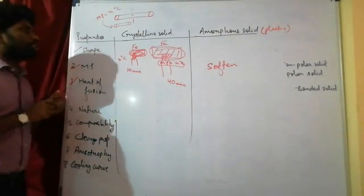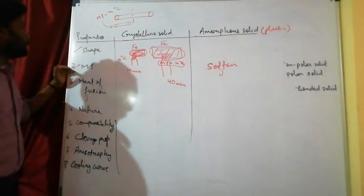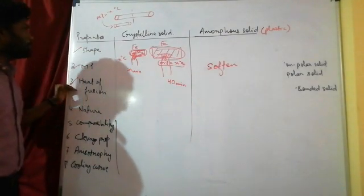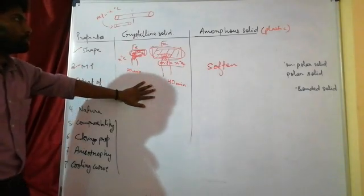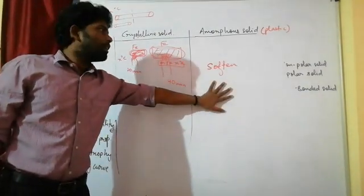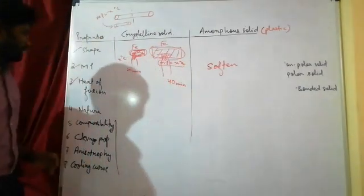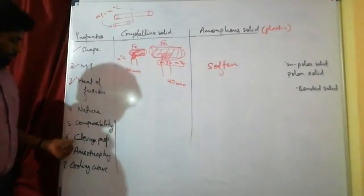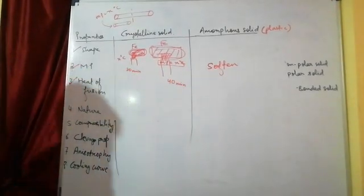So the three points covered today are: shape, melting point, and heat of fusion. For crystalline solids, heat of fusion is fixed; for amorphous solids, it is not fixed. We will continue with the remaining points in the next class. Thank you.